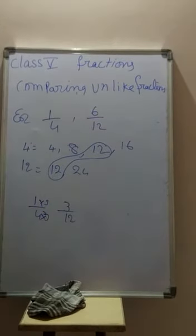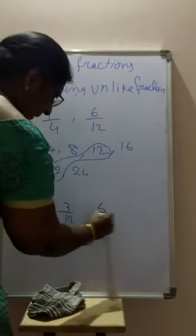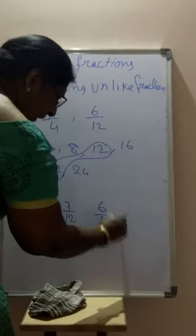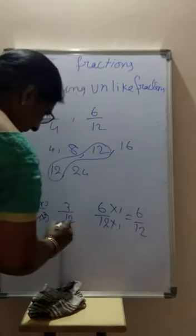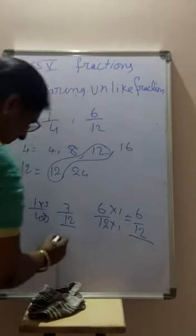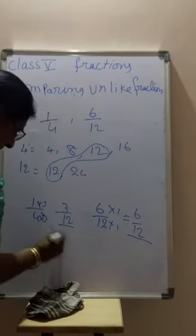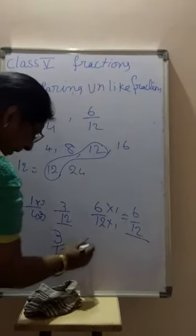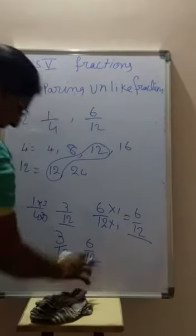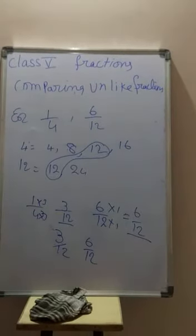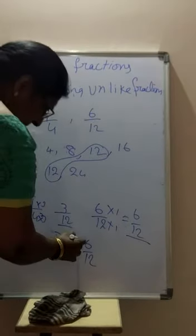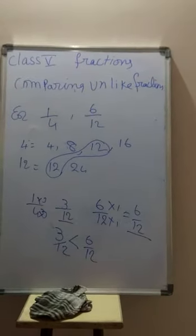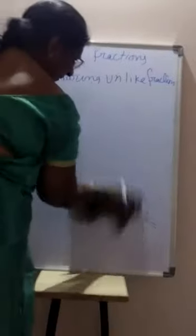Multiply numerator by 3: 3 by 12. For 6 by 2, multiply to get denominator 12: 6 by 12. Now the denominators are the same — 3 by 12 and 6 by 12. These are now like fractions, easy to compare. 6 by 12 is greater than 3 by 12.